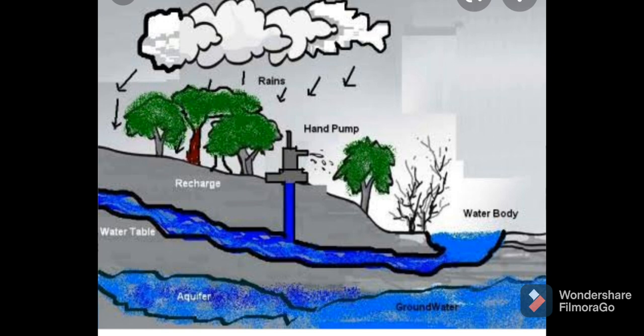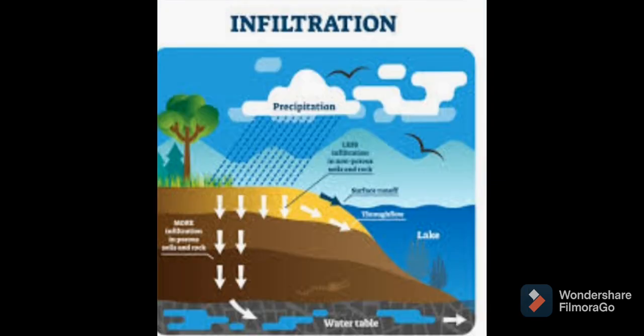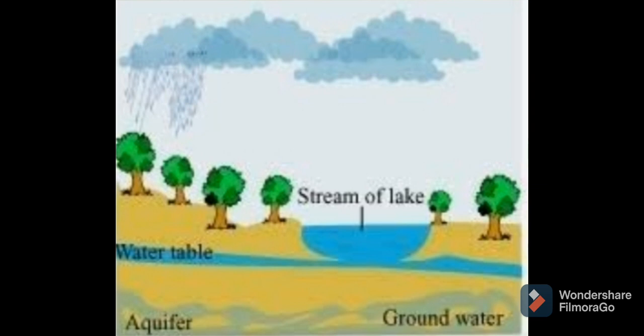So to summarize: groundwater is the water present below the water table, or the water found below the earth's surface. Infiltration is the process of seeping water into the ground. An aquifer is the layer where groundwater is stored between layers of hard rock below the water table — the bedrock is porous in nature so water collects there. The water table is the upper limit of the groundwater level. I hope you got all these points. If you have any doubt, you can ask me. Thank you.